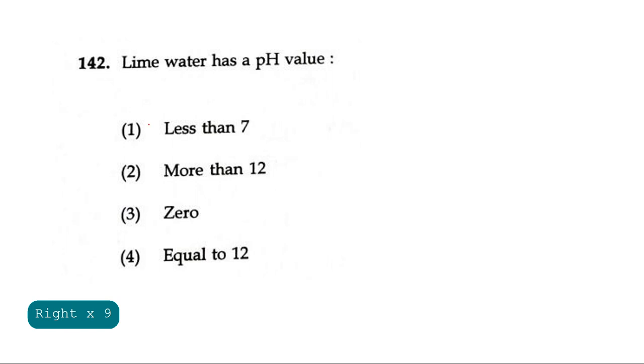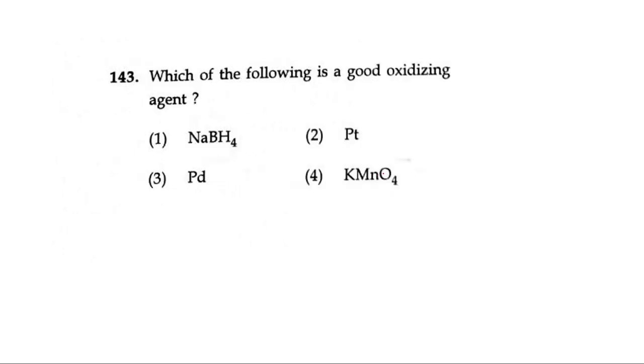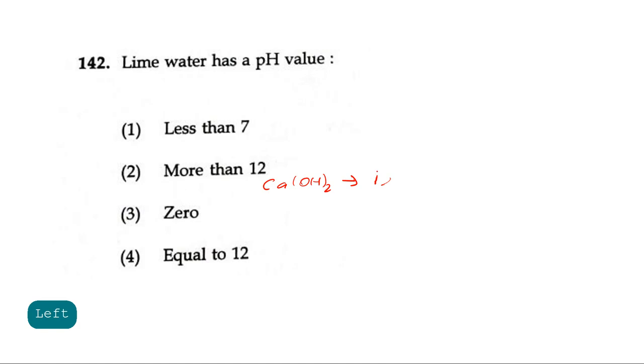Question 142: Lime water has a pH value of? Lime water is calcium hydroxide Ca(OH)2. Lime water has a pH value of 12.4, that is it is a very strong base. The options are less than 7, more than 12, 0, equal to 12. Generally strong bases have a pH value greater than 7, and strong bases have greater than 13 or 12. The correct answer is more than 12 since it is greater than 12, 12.4.